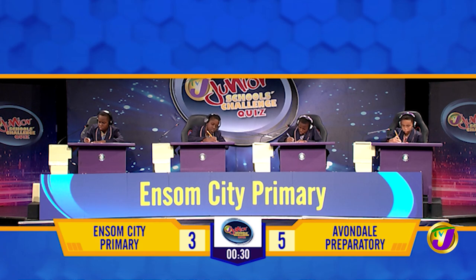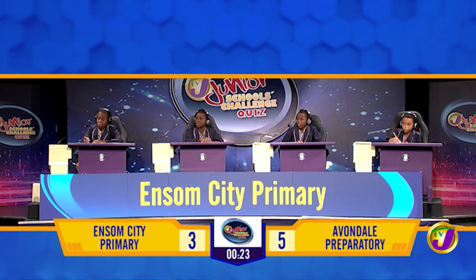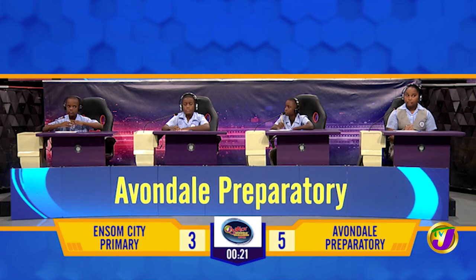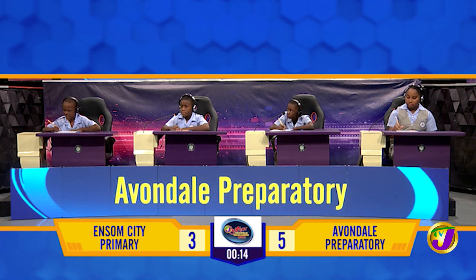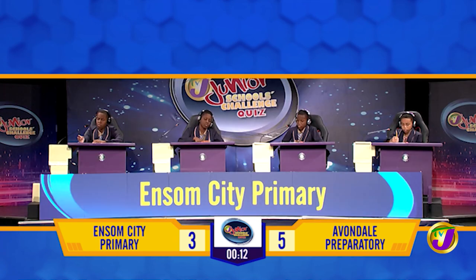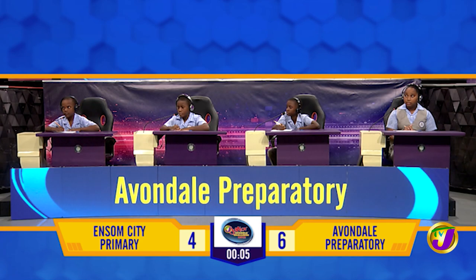Mathematics for Ensom City: what is the next term in the sequence — a quarter, three quarters, one and a quarter? Two and a quarter. Incorrect — one and three quarters. Mathematics for Avondale: what is the next term in the sequence two, three, five, seven, eleven? Thirteen. Correct!